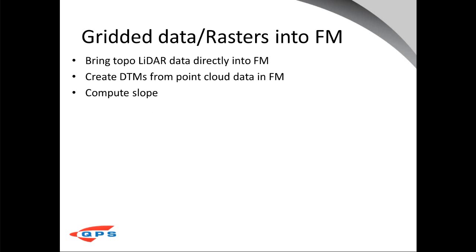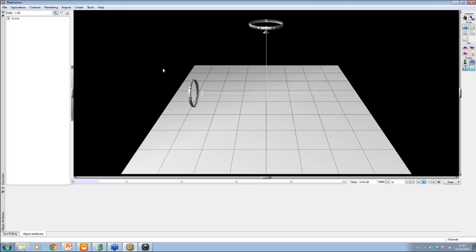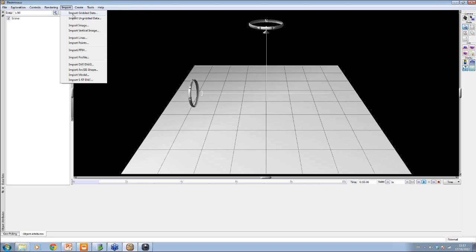That's a brief view of Quincy showing where we get the data from. One of the things you can also do for background is bring in a number of topo LiDAR gridded data sets, which you can bring in very simply. With Fledermaus, you just import a gridded data set — gridded meaning it's already a regular spaced digital terrain model.